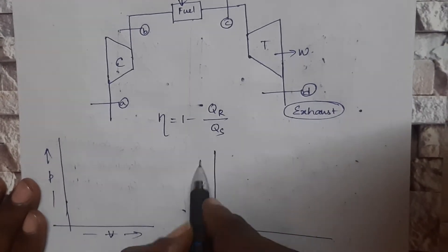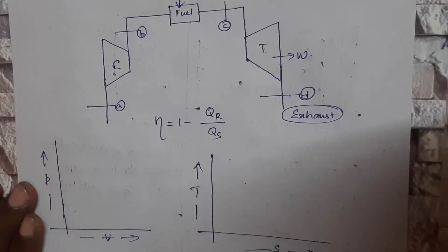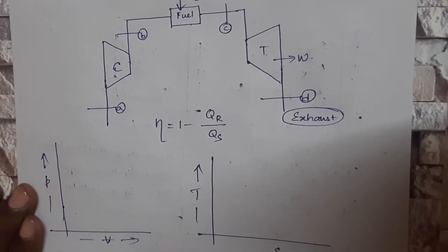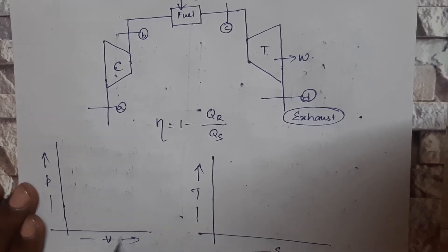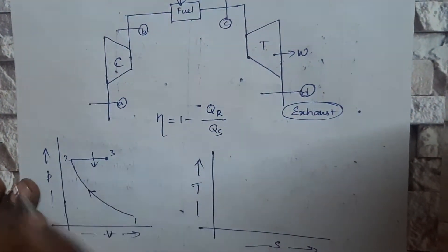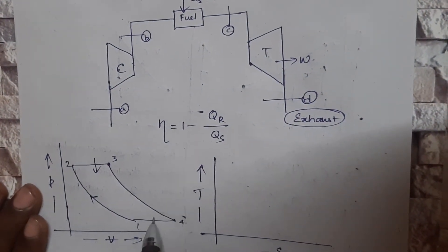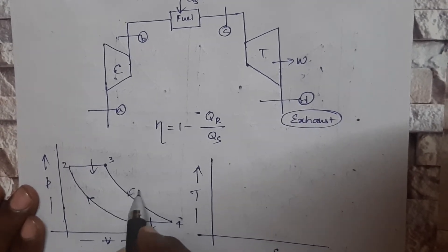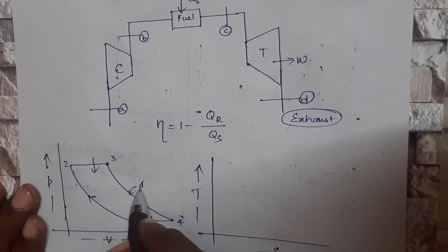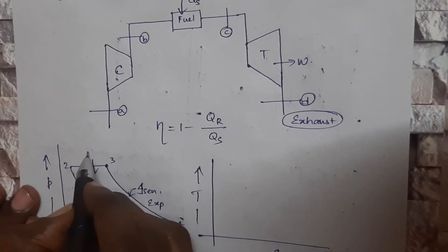In the Brayton cycle, there are four processes: two constant pressure processes and two isentropic (adiabatic) processes. From 1 to 2 is isentropic compression; from 2 to 3 is constant pressure heat addition; from 3 to 4 is isentropic expansion; and from 4 to 1 is a constant pressure heat rejection process.